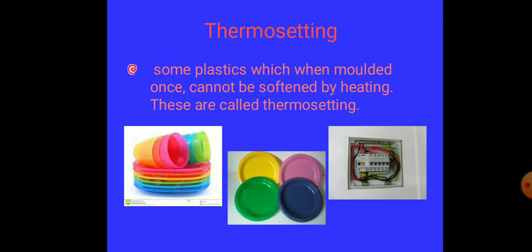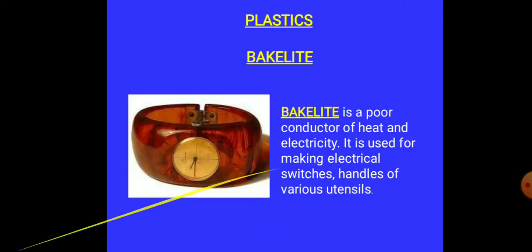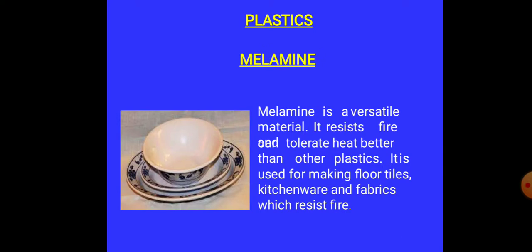Here you can see some examples. For example, bakelite. Bakelite is a poor conductor of heat and electricity. It is used for making electrical switches, handles of various utensils. And melamine also. Melamine is a versatile material. It resists fire and tolerates heat better than other plastics. It is used for making floor tiles, kitchenware, and fabrics which resist fires. Bakelite and melamine, nitrogen content is more in these.